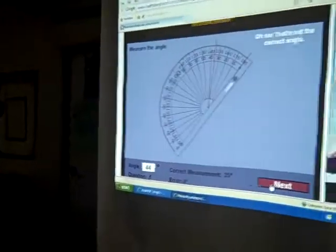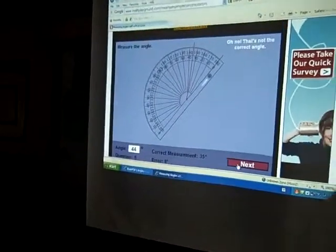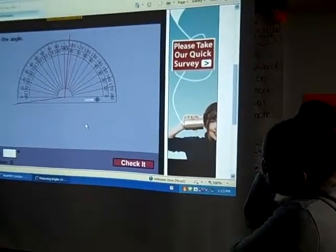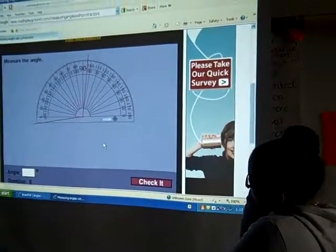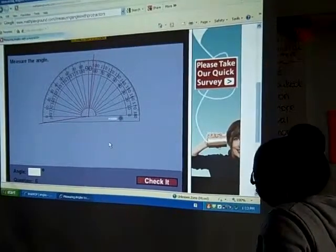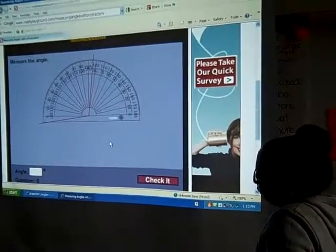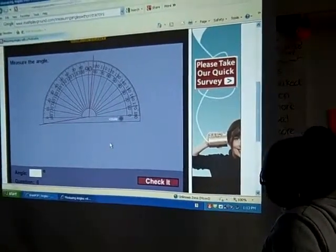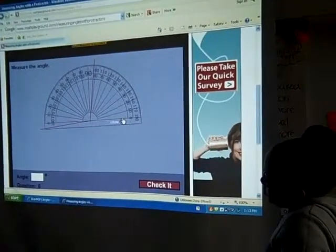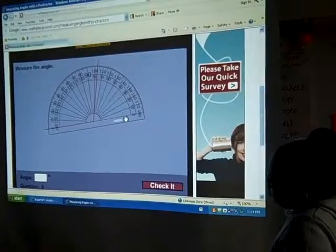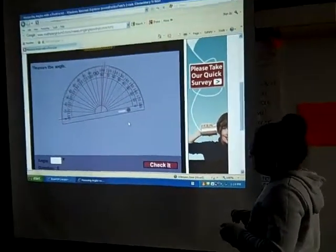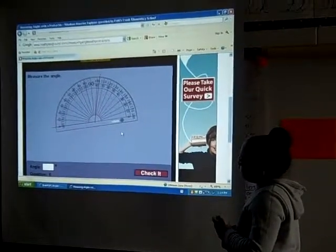All right. Shayla, you ready, love? Go ahead and stand on up. Okay. You're thinking obtuse, maybe a little bit more than 90. Let's check with the protractor. I'm going to line it up. Do I line it up right there? Yes. All right. Shayla, go ahead and look at it. You said it was an obtuse angle.